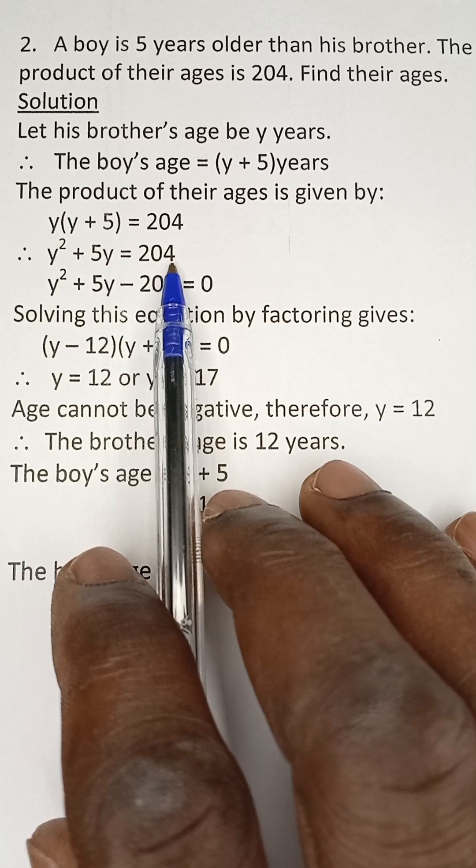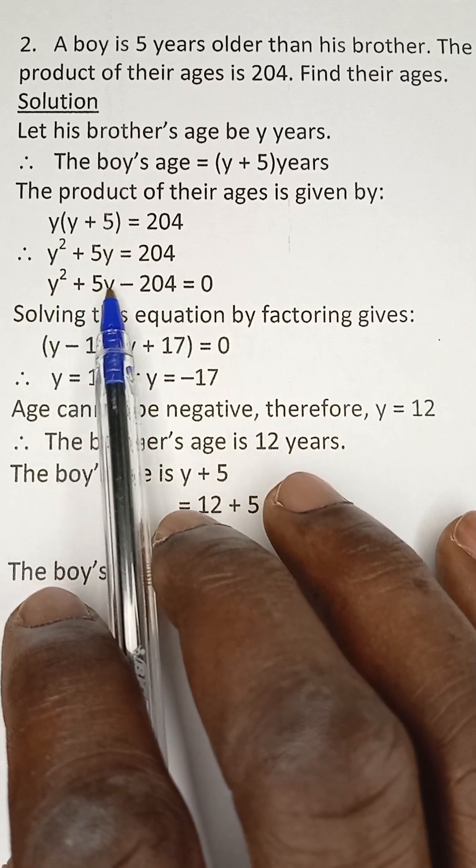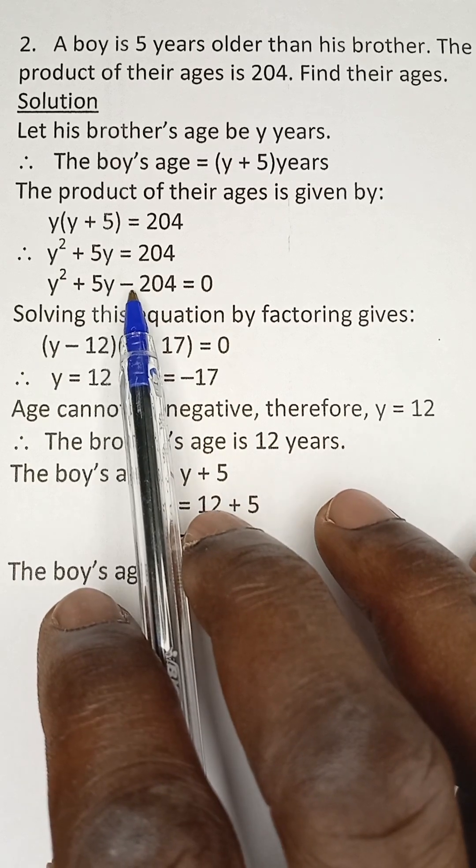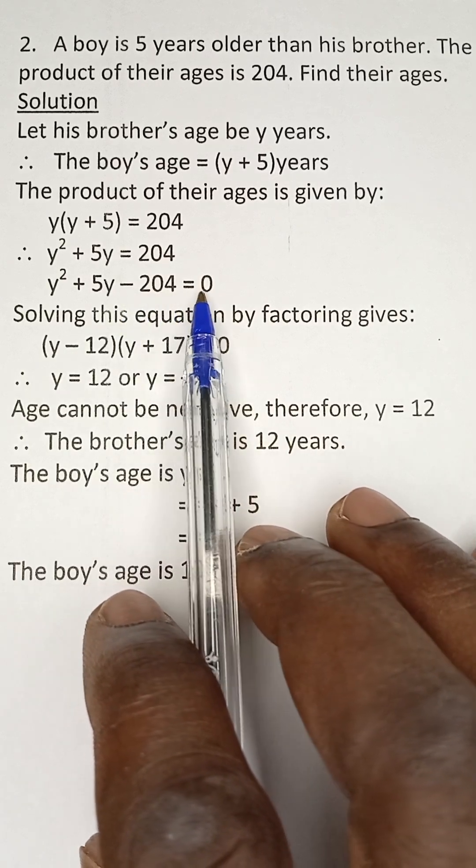This is a quadratic equation that we need to equate to zero. So this positive 204, when it comes to the left-hand side, it becomes negative 204. That equals zero.